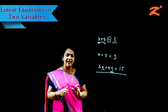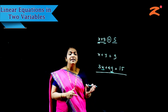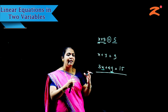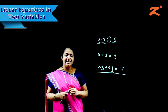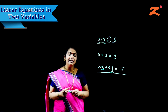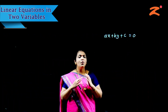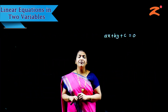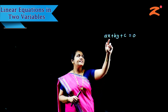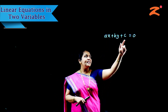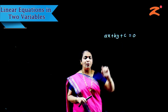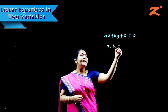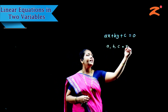We have studied this chapter in the previous standard, but here we are going to study it in detail. Now we will see the general format of this equation. The general format for a linear equation in two variables is AX plus BY plus C equals 0, where A, B, and C are real numbers.